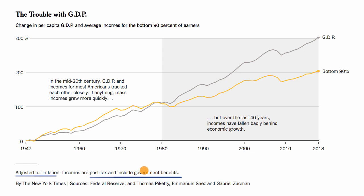If someone is making $100,000 but paying $35,000 in taxes, then the income shown is post-tax — that would be $100,000 minus $35,000, or $65,000.